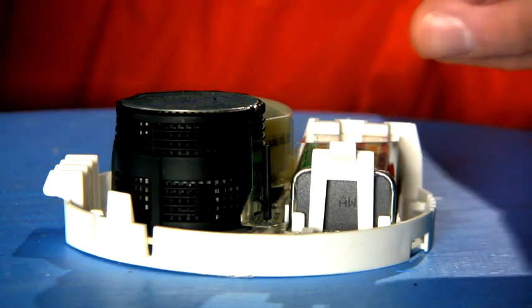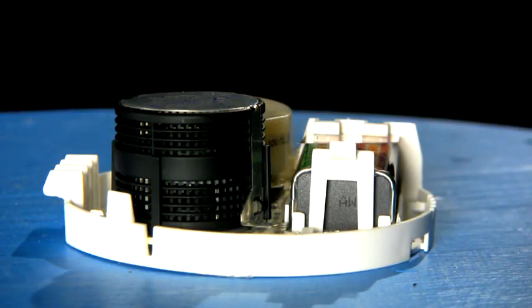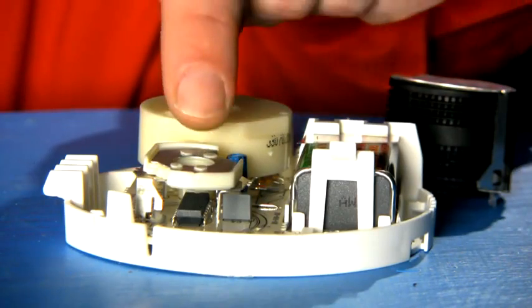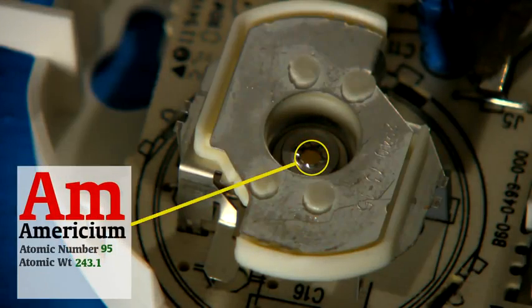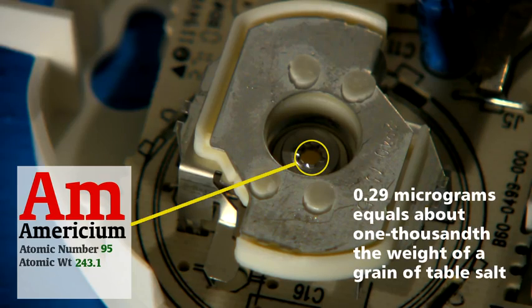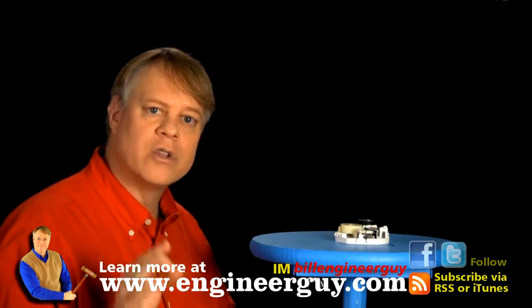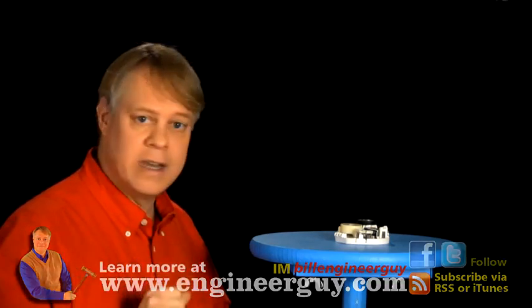This black cylinder has louvers which guide air into the detector. Now it hides the essential part of the device. Tucked in here lies about one microcurie of radioactive americium-241. That's about .29 micrograms. That tiny bit of radioactive material generates a small current that makes the detector work.